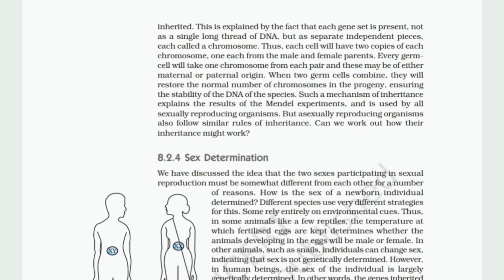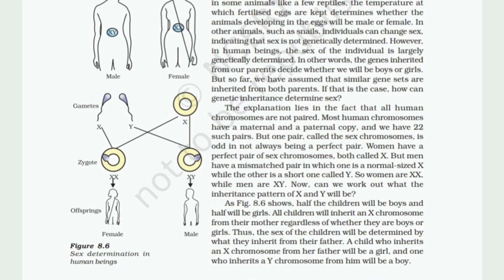Sex Determination. We have discussed the idea that the two sexes participating in sexual reproduction must be somewhat different from each other for a number of reasons. How is the sex of a newborn individual determined? Different species use very different strategies for this. Some rely entirely on environmental cues. In some animals like a few reptiles, the temperature at which fertilized eggs are kept determines whether the animals developing in the eggs will be male or female. In other animals, such as snails, individuals can change sex, indicating that sex is not genetically determined. However, in human beings, the sex of the individual is largely genetically determined. The genes inherited from our parents decide whether we will be boys or girls. But so far, we have assumed that similar gene sets are inherited from both parents. If that is the case, how can genetic inheritance determine sex?